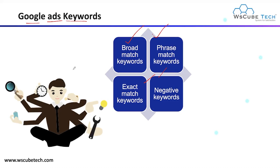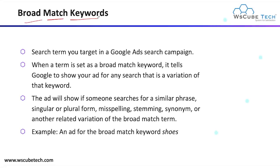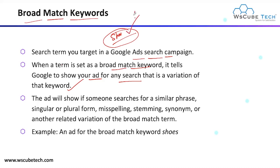For Broad Match keywords, the ad will show if someone searches for a similar phrase, singular or plural form, misspelling, stemming, synonym, or other relevant variation of the keyword. For example, in a Google Ad, the broad match keyword would be something like 'shoes' — meaning if any phrase or query contains something related to 'shoes,' you can showcase your ad. This tells Google to show your ad for any variation of that keyword.